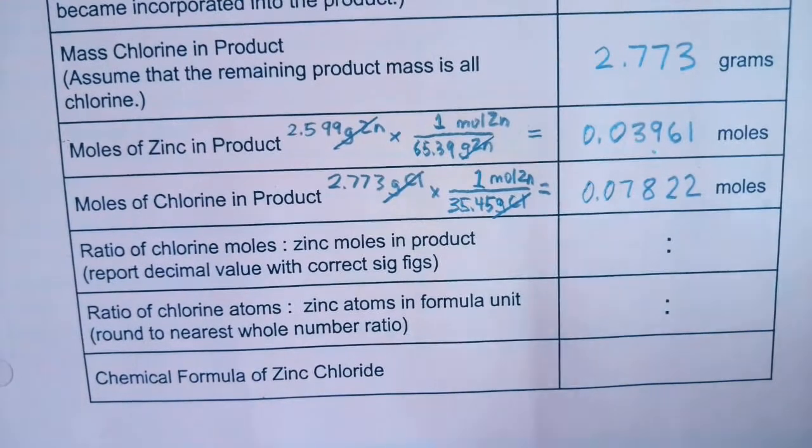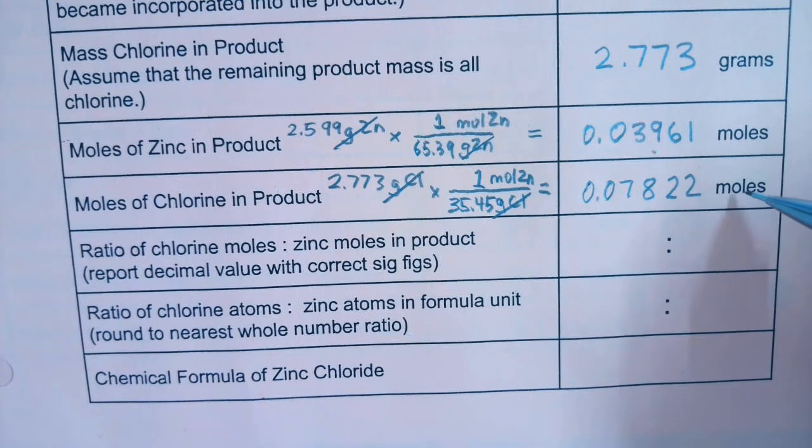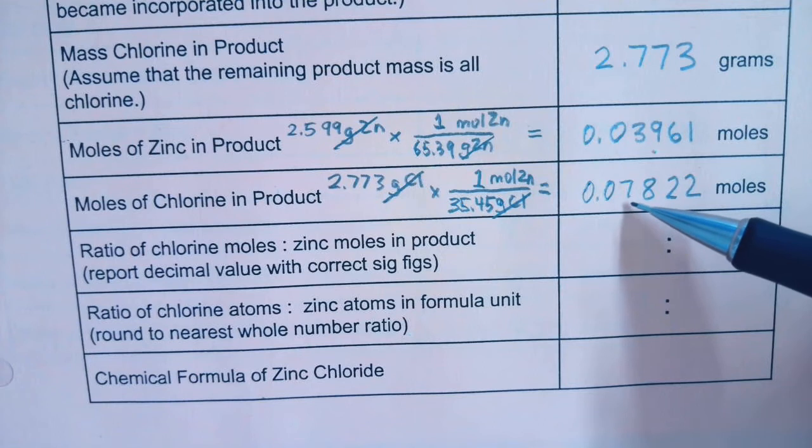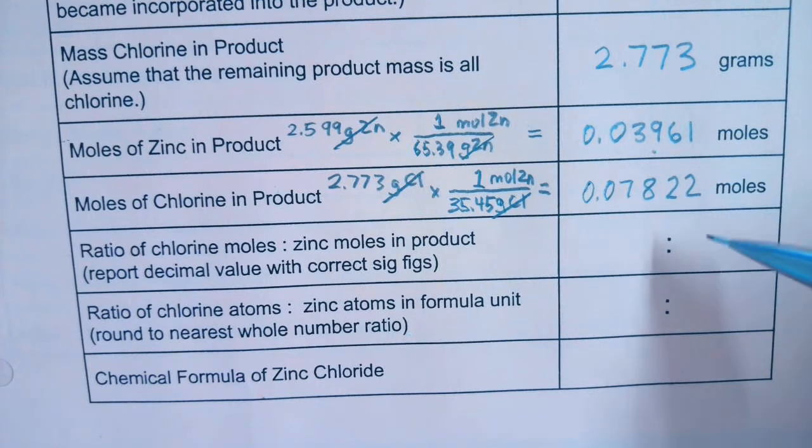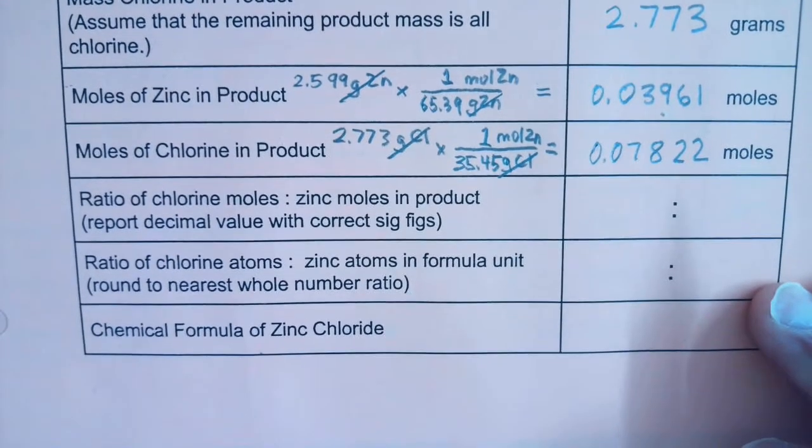Now, these units, moles, actually do count up the atoms. And just by looking at it, I can see that this 0.78-ish value is about double the 0.39-ish value. That's a good thing. When you do an empirical formula problem, you want to have a whole number ratio.